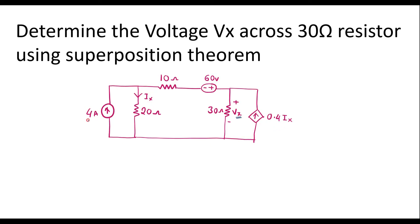First, let me consider the 4 amp source alone and find the voltage across the 30 ohm resistor — I will call it Vx1. Later, I will consider the 60 volt source alone and find the voltage across the 30 ohm resistor — I will call it Vx2. So the total voltage will be the sum of these two, that is Vx1 plus Vx2.